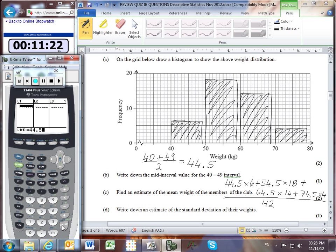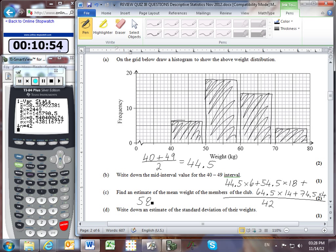Entering the frequencies: 6, 18, 14, and 4. Going into stat calculate, one-var stats of list 1 and list 2, which gives a mean of 58.3. You would get the same answer typing the calculation directly. The standard deviation is 8.44.